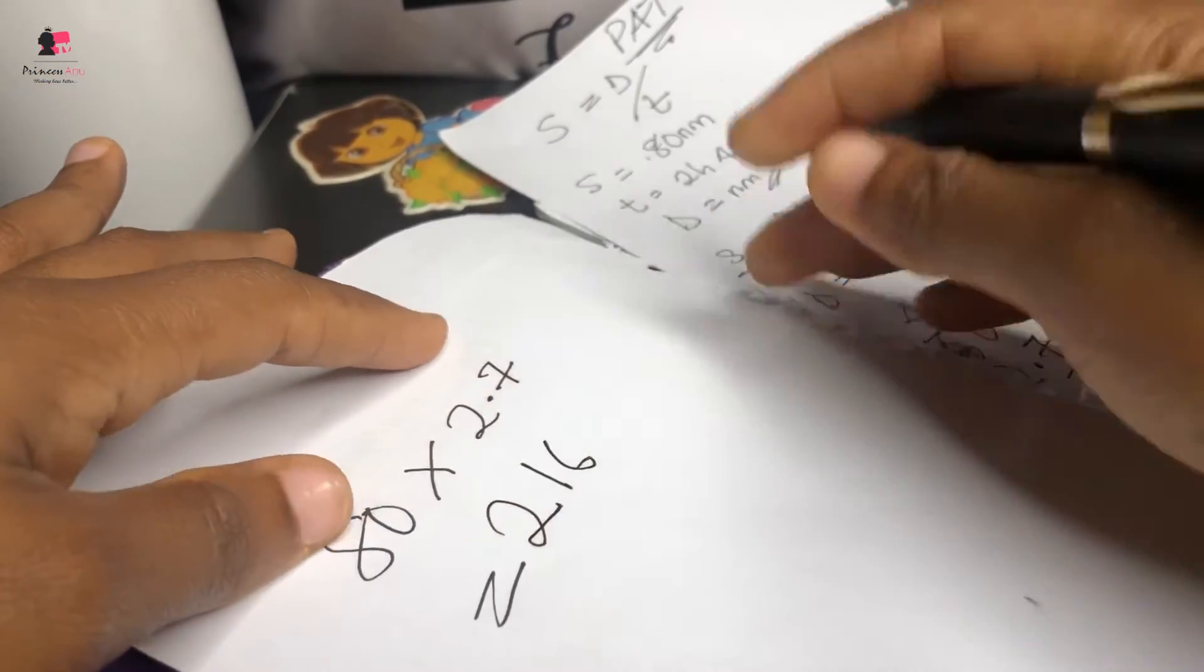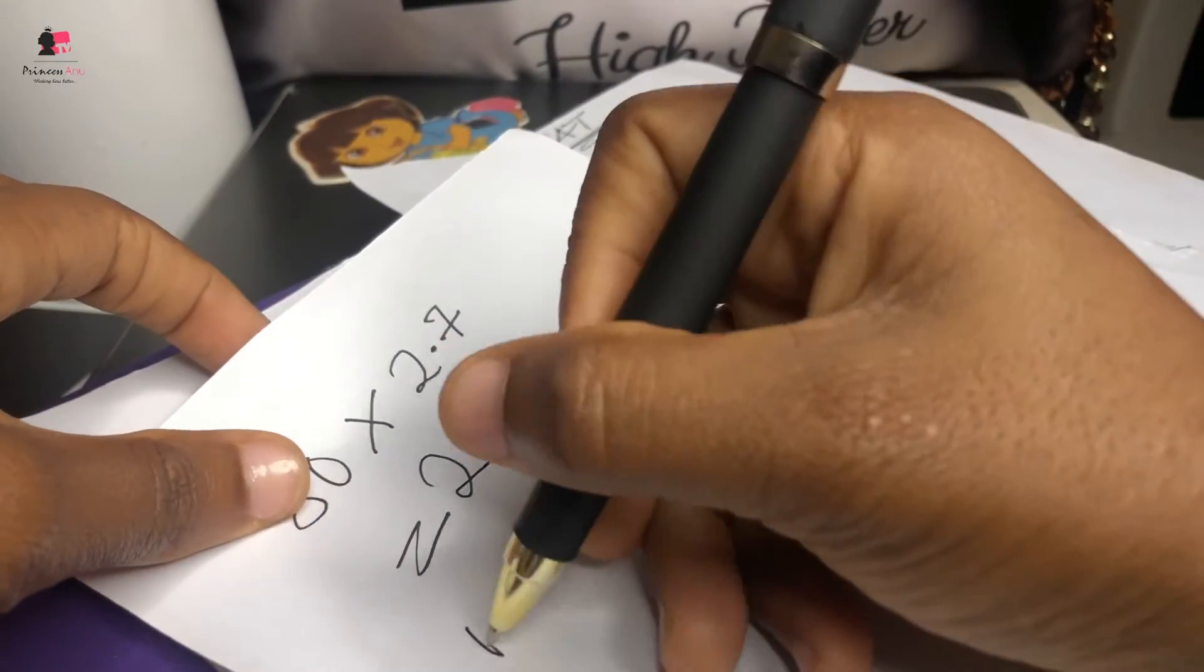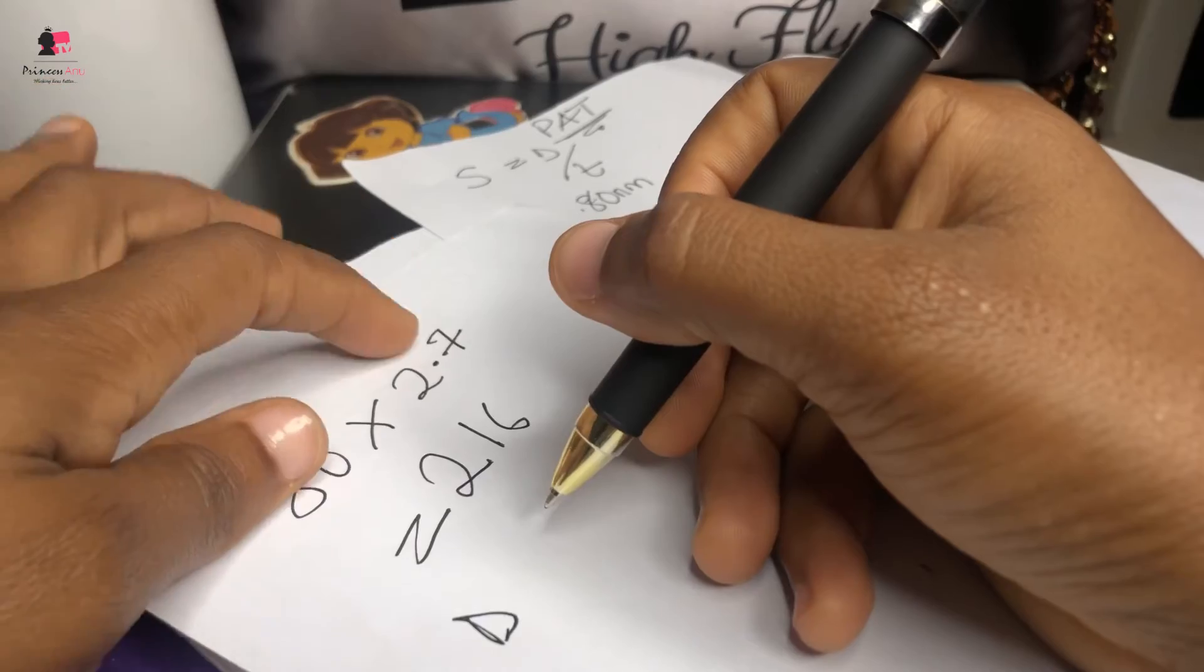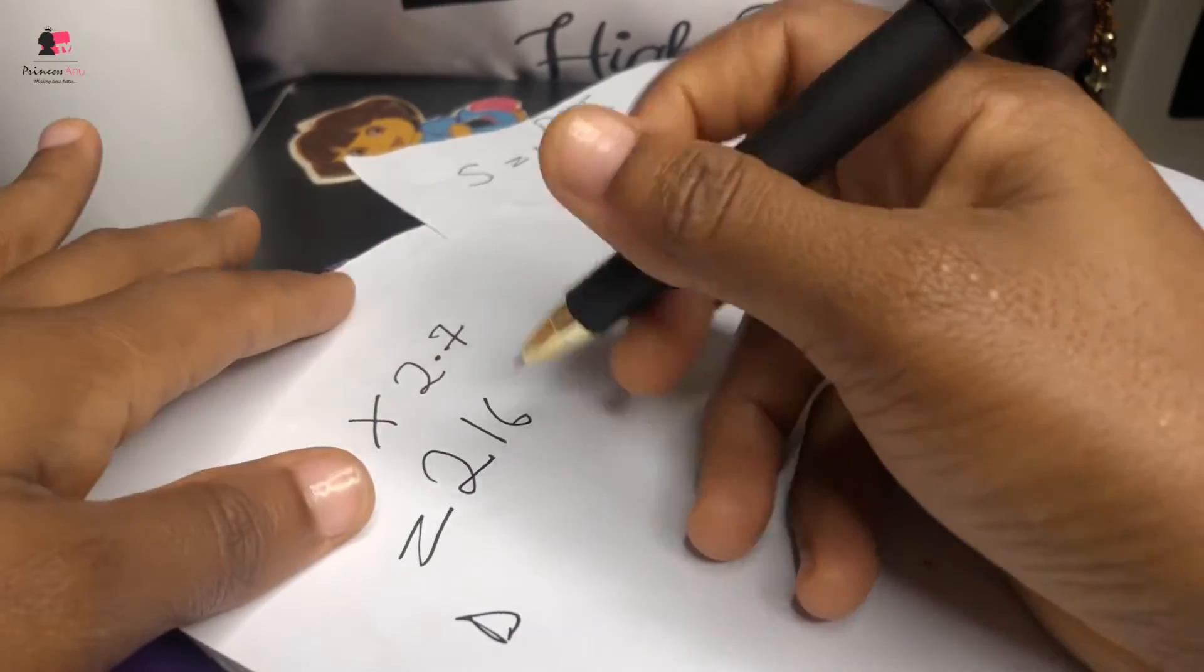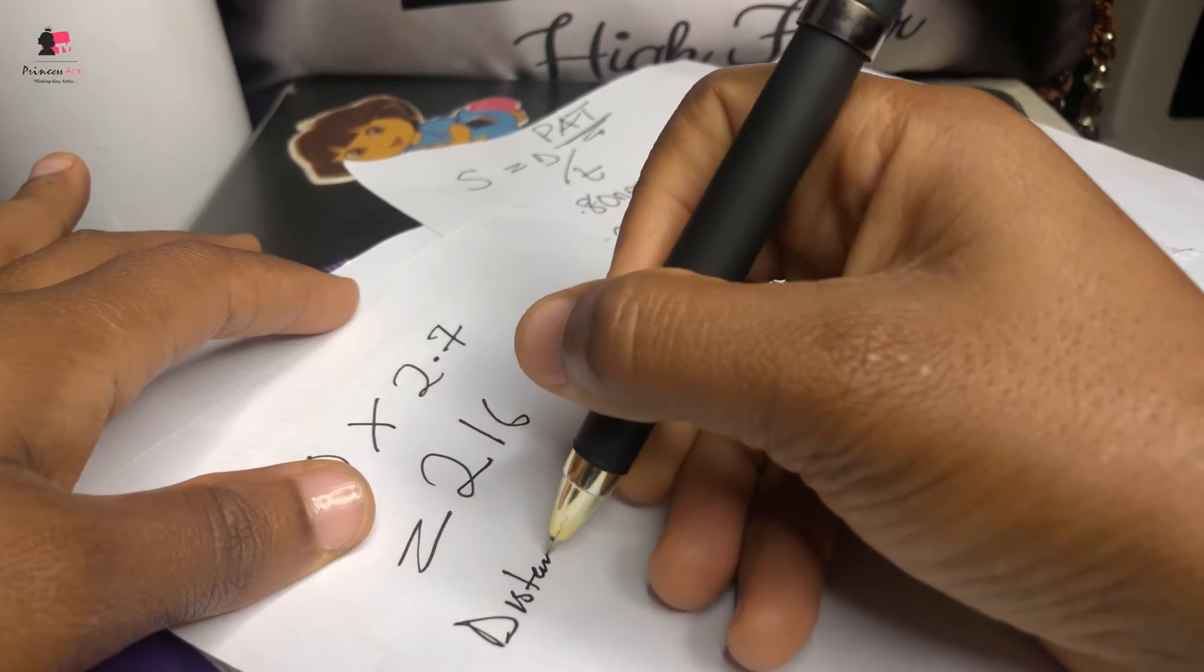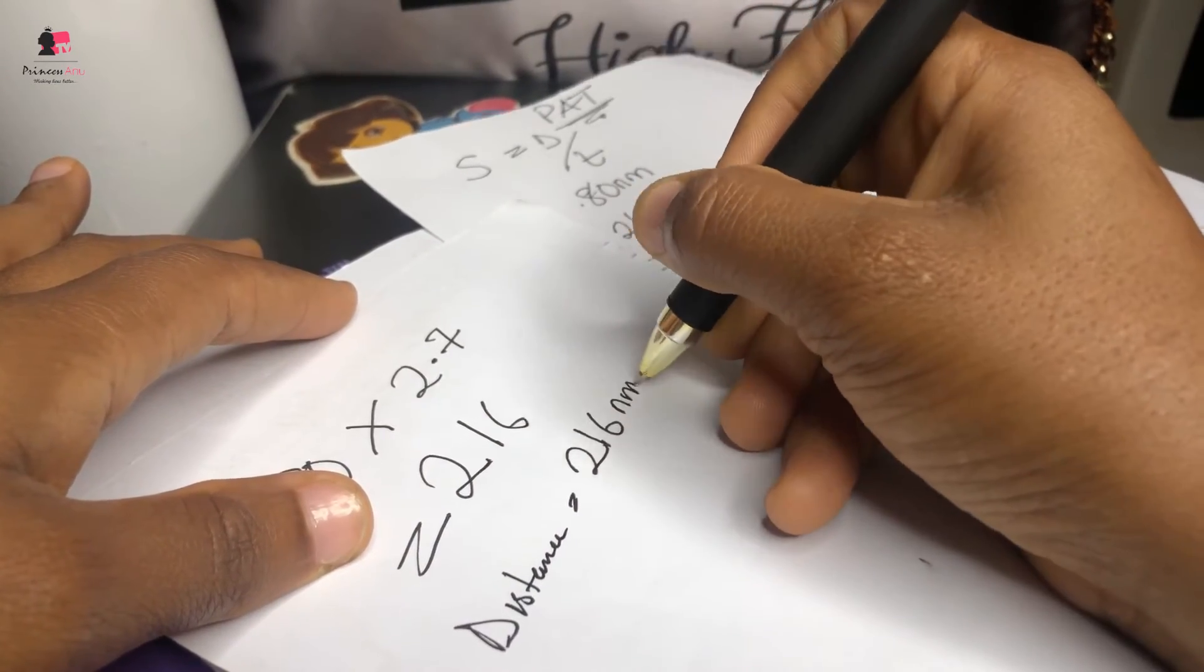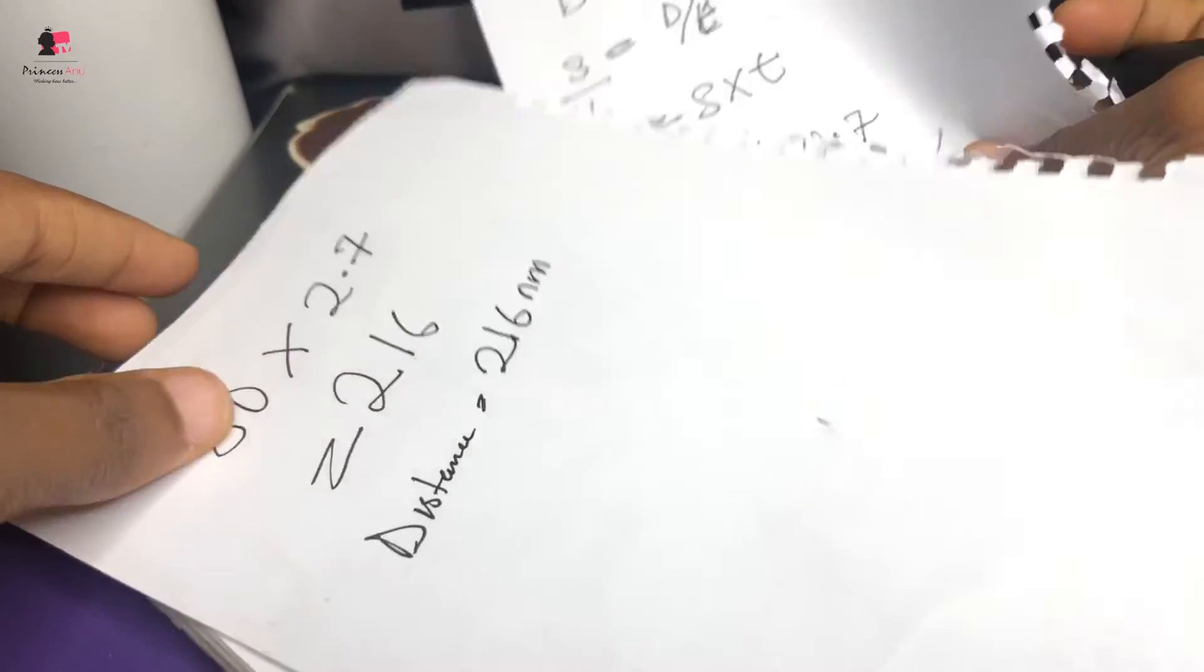You have 216. So this is the distance that is going to fly in 2 hours, 2.7 hours, that is 2 hours 42 minutes. So distance will be equal to 216 nautical miles.